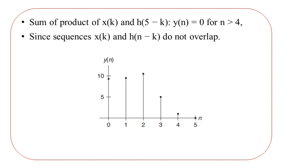Finally, we represent the output sequence Y of N graphically. Y of 0 has amplitude 9, Y of 1 has amplitude 9, Y of 2 has amplitude 11, Y of 3 has amplitude 5, Y of 4 has amplitude 2, and for n greater than 4, all amplitudes are 0. This was the simplest problem to practice the convolution operation using the graphical method.